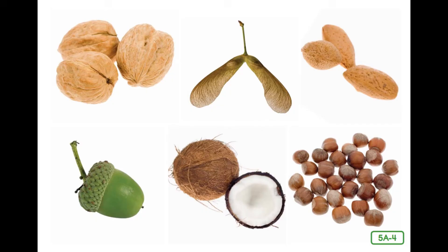Most seeds are carried away from the parent tree that produced them. Do you remember how seeds are dispersed or spread apart? They are dispersed in various ways. They are carried by animals, people, wind, and water. Wherever they land, they rest in the soil until germination begins.